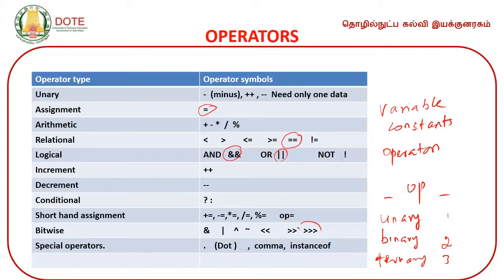Logical operators include double ampersand (AND) and OR operations. In Java, we also have a right shift operator (>>) which shifts bits to the right with zero fill, and a left shift operator which shifts to the left with zero fill.